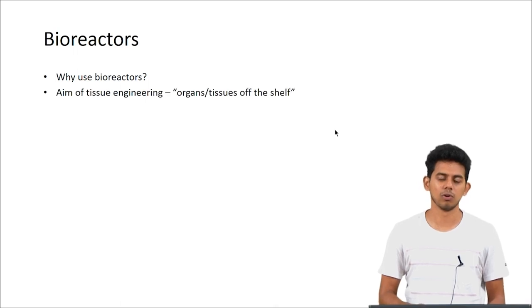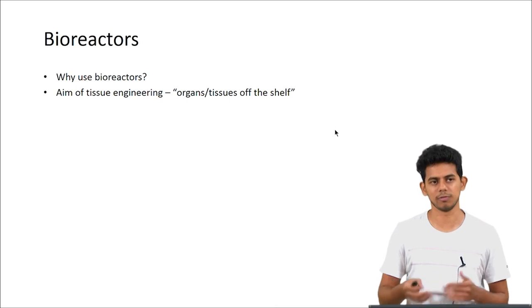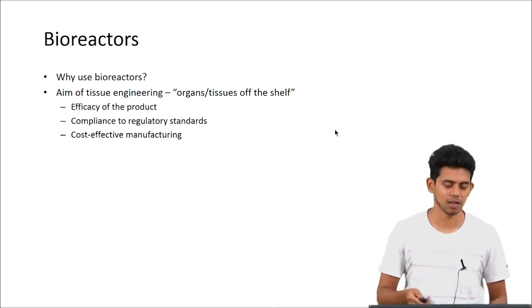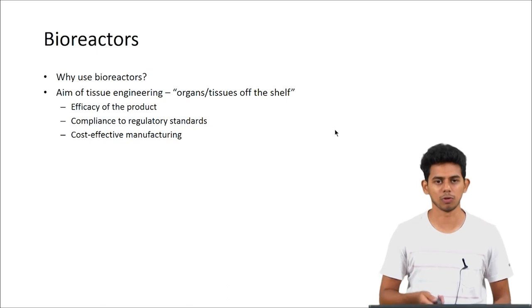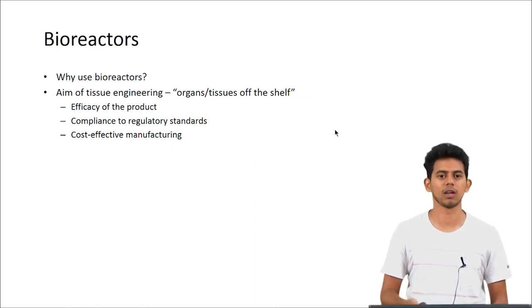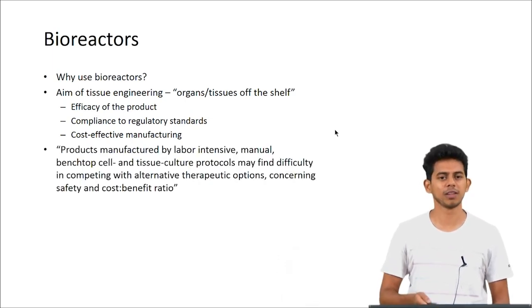Why use bioreactors? The aim of tissue engineering has been to get organs or tissues off the shelf wherein you are able to replace a tissue or organ which is damaged as easily as you buy a prosthetic. The factors which play an important role in making this feasible are the efficacy of the product - the product has to do what the natural tissue or organ does. Then it has to comply to regulatory standards and you should be able to produce these tissues or organs in a cost-effective manner. This is where the bioreactors come in.